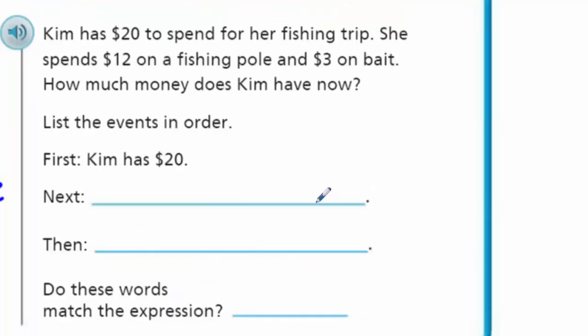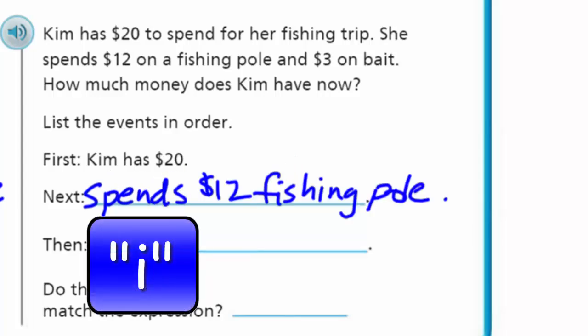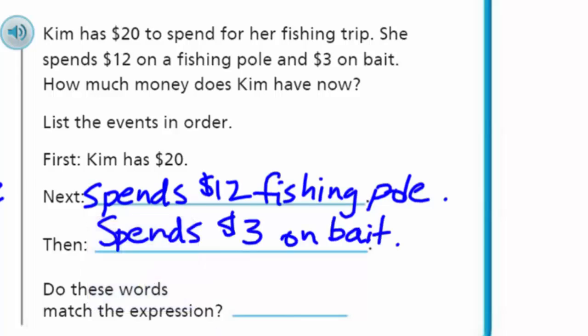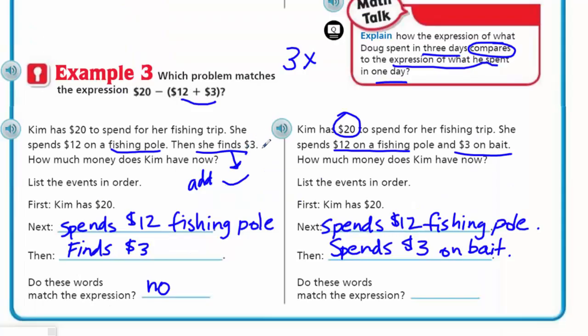Let's look at the next one. Kim has $20 to spend for her fishing trip. She spends $12 on a fishing pole. That's exactly the same. Then it says, and $3 on bait. So do these words match the expression? Yes, they do. They do match because now we have two spending situations. Meaning we're subtracting $3 on bait and the $12 on the fishing pole. These both need to be subtracted from the amount of money she had from the beginning. Where this, she found $3, that was adding. And that was one of the differences.